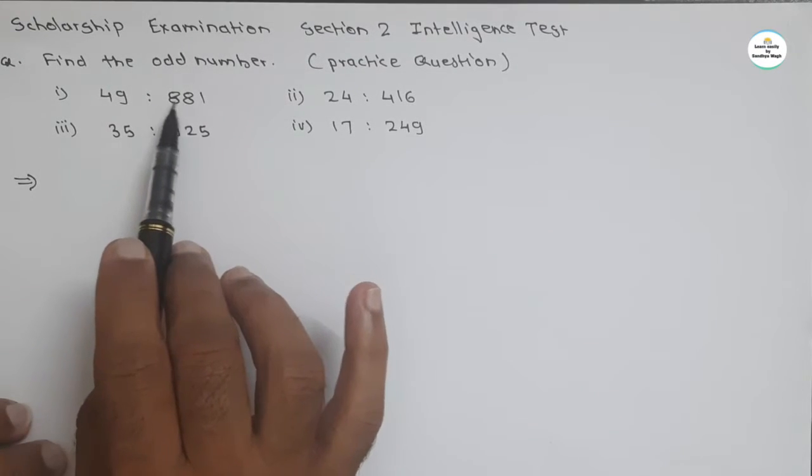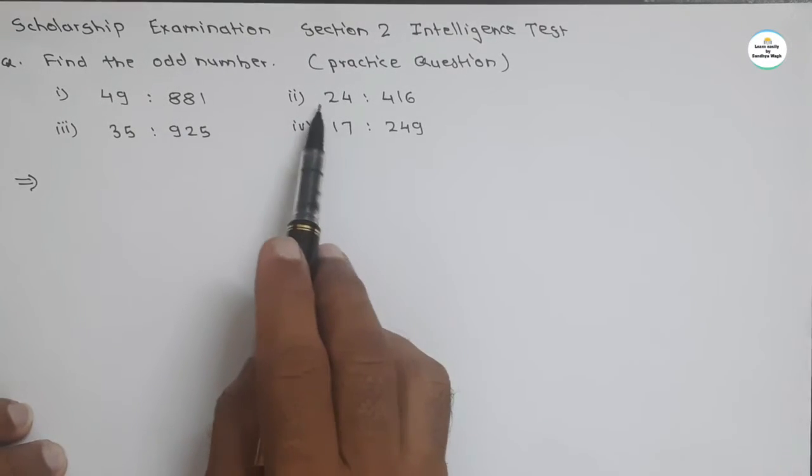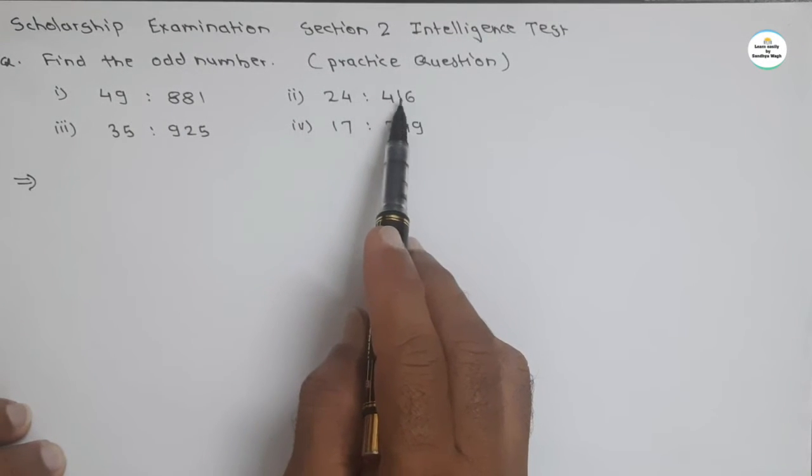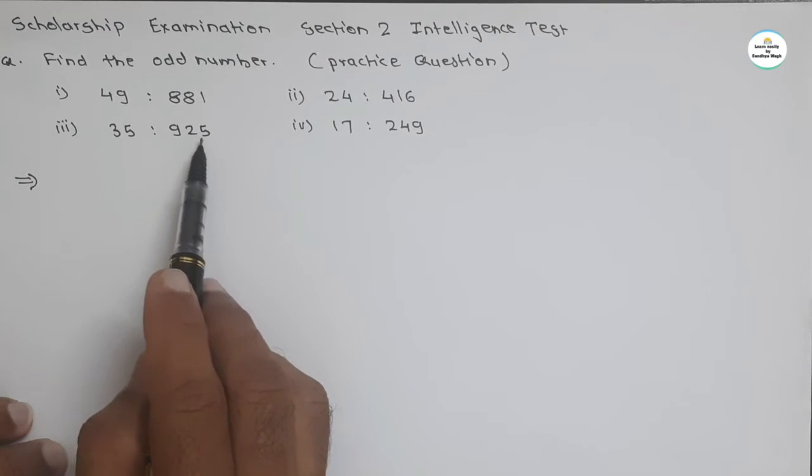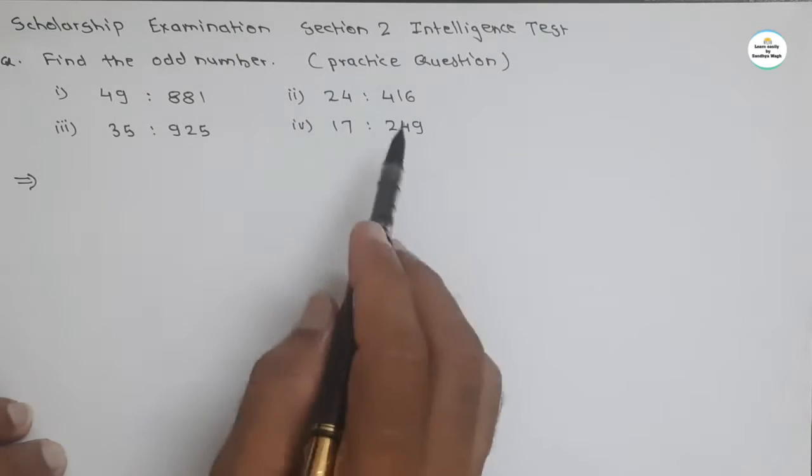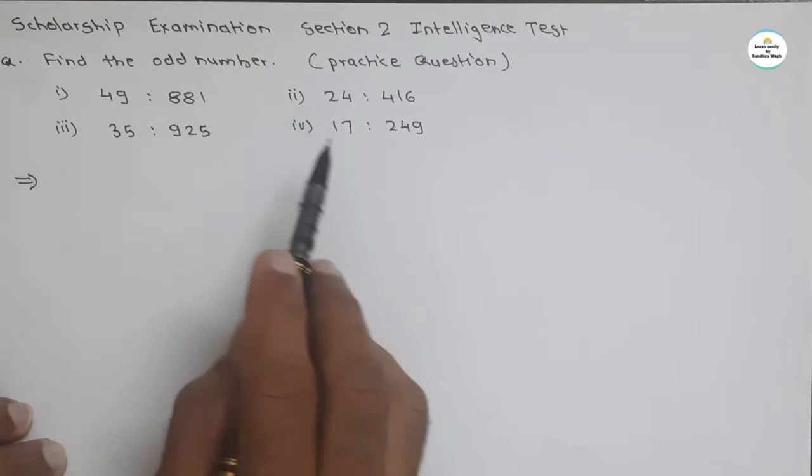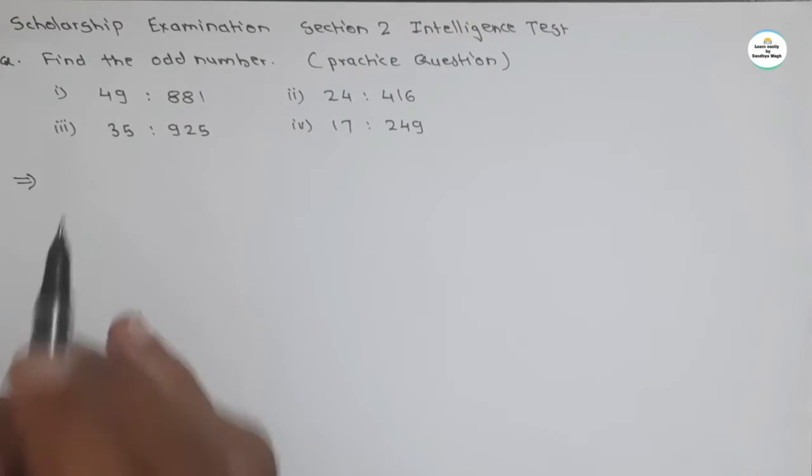First number 49 and 881, some relation between 49 and 881. Second, 24 some relation with 416. Similarly 35 some relation with 925, 17 some relation with 249. Here that relation is common for 3 numbers. Only one number is odd and we have to find it. But first we have to find the relation.